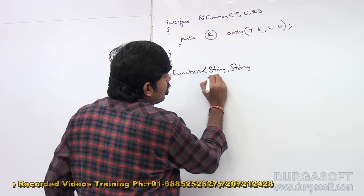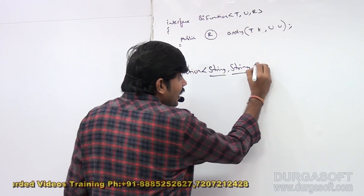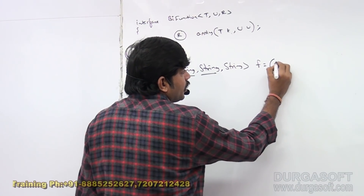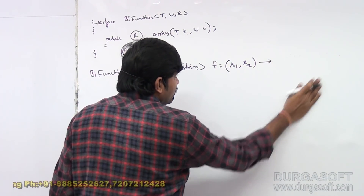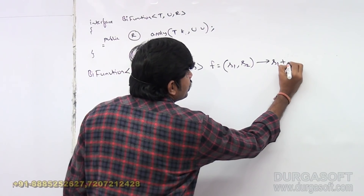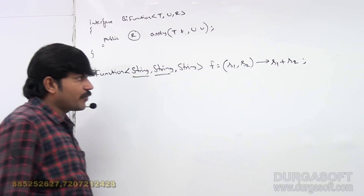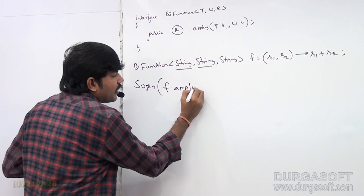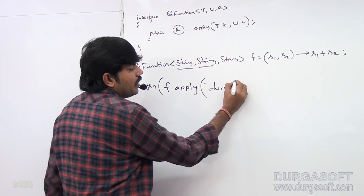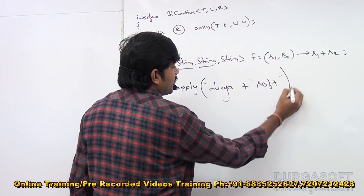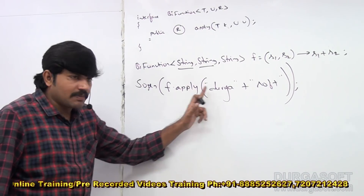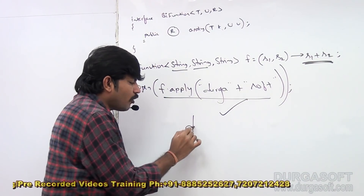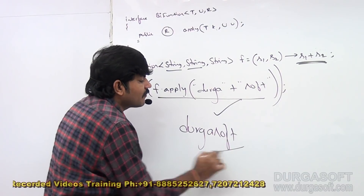I want to define a bifunction where both inputs are String type and the return type is also String. So BiFunction of String, String, String — F equals a lambda: given S1 and S2, it returns S1 plus S2. Then System.out.println of F.apply of 'Durga' and 'Soft', which outputs 'DurgaSoft'.